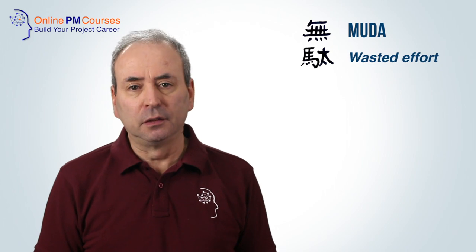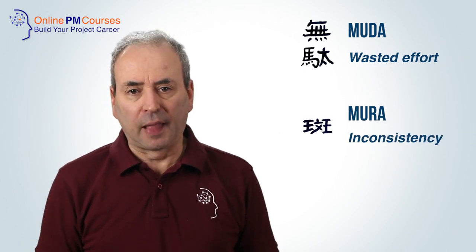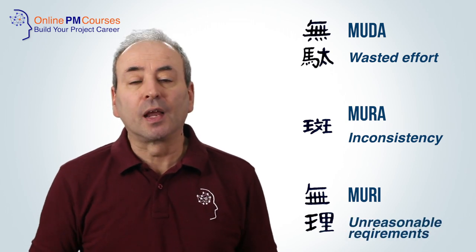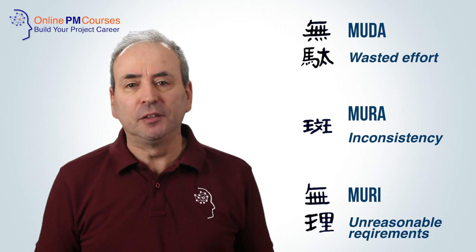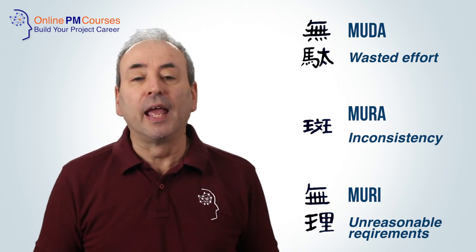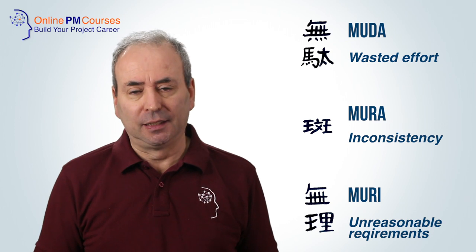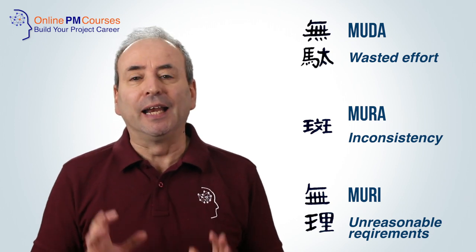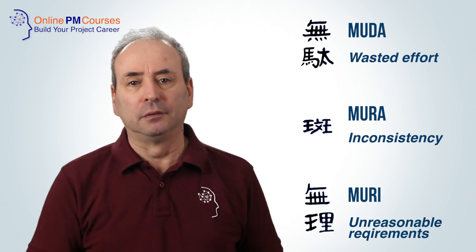The three forms are: muda, wasted effort; mura, inconsistency; and muri, unnecessary requirements. So if we do things we don't need to be doing, that's muri. If we do them in a way that is inconsistent, then that's mura. And if we do them in a way that is inefficient, that's muda.